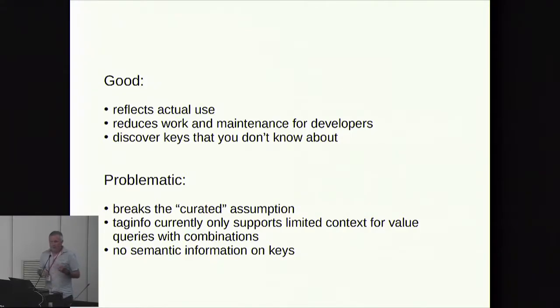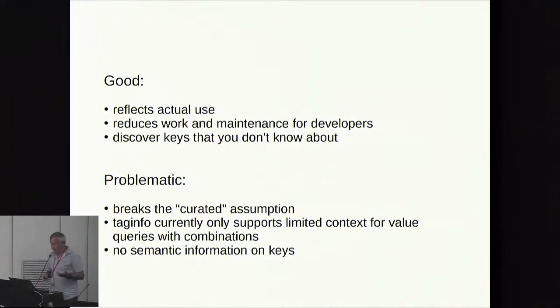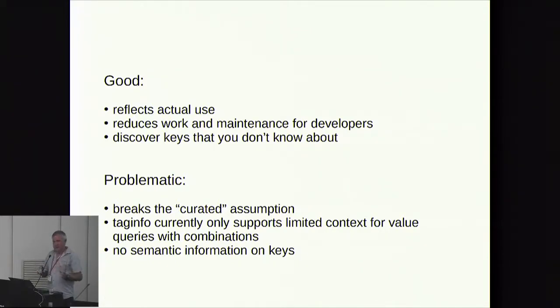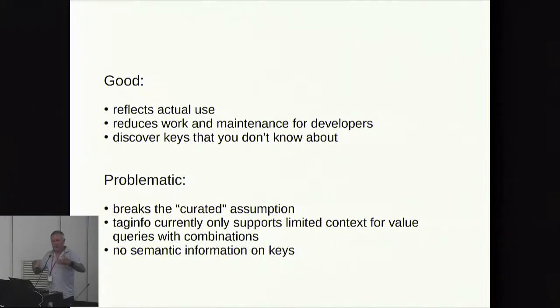One question is: can we refine things and improve tag info use in these presets? The good thing about tag info is that it reflects actual use, it reduces work for developers, and it allows you to discover keys you don't know about. But the problematic side is it breaks the curated assumption and provides limited context for queries. For example, 'landuse=construction' — construction is used as a sub-tag for buildings, highways, and so on — and you'll get all those values mashed up together.